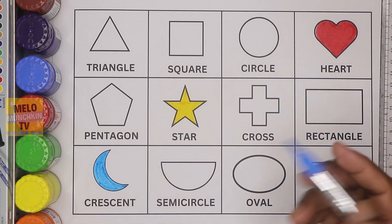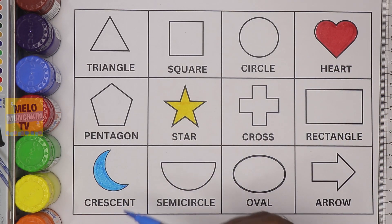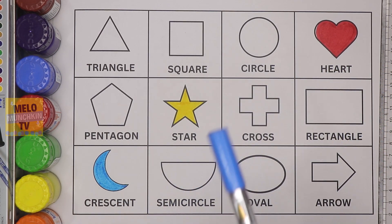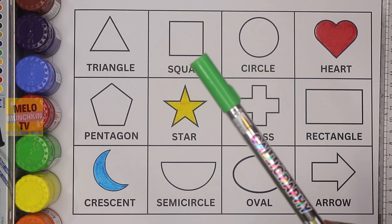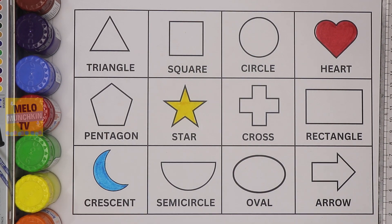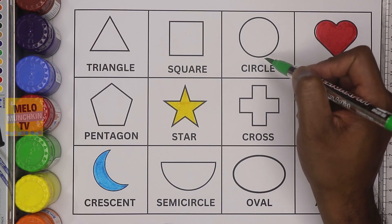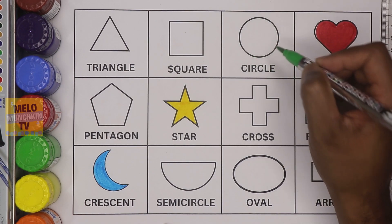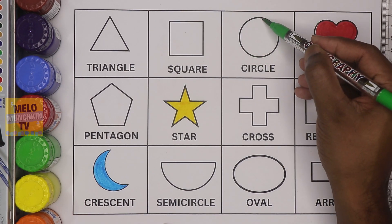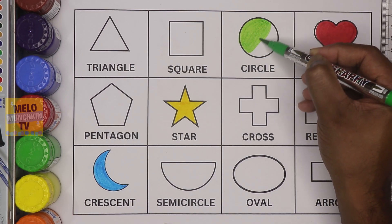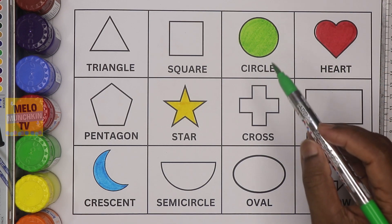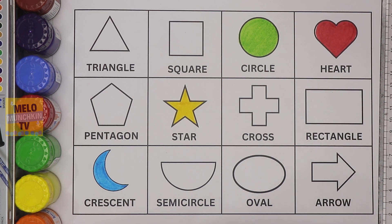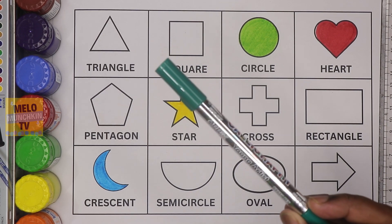Okay, so this is crescent shape and the color is blue color. Next, I'll choose light green color to fill this shape. This is circle — circle has no sides. Let's color it. Okay, so this is circle and the color is light green color.